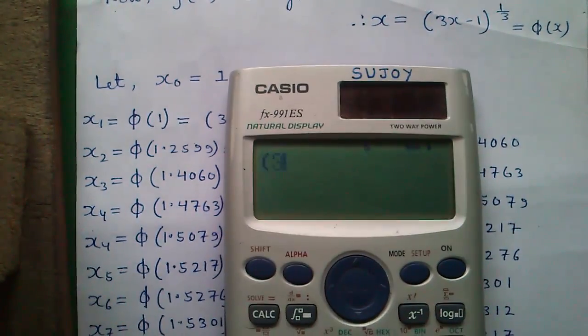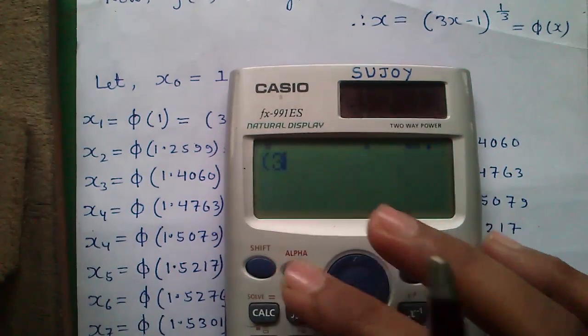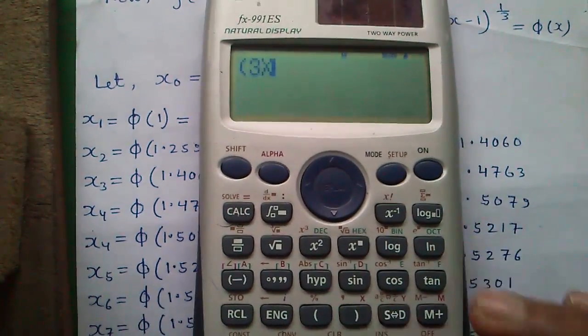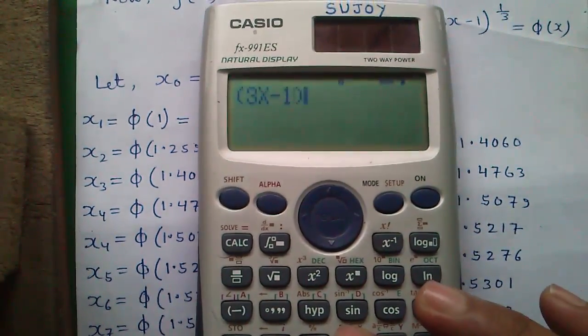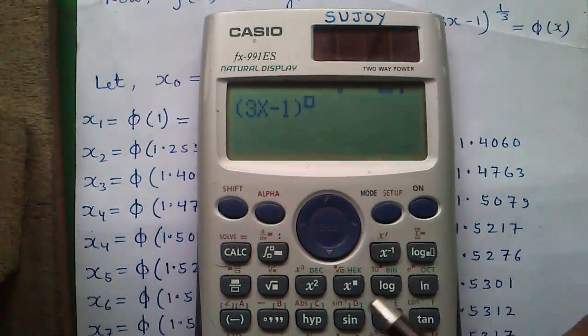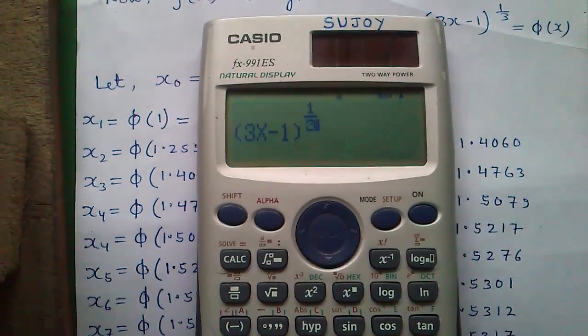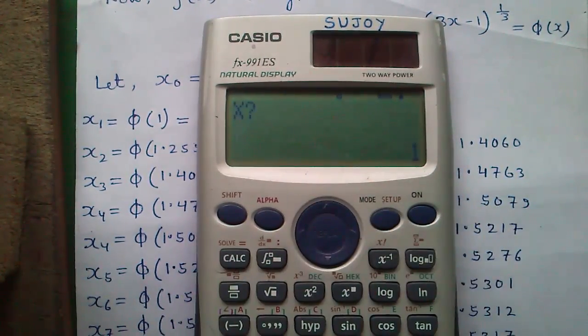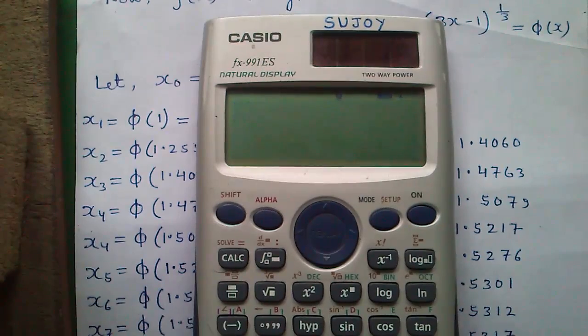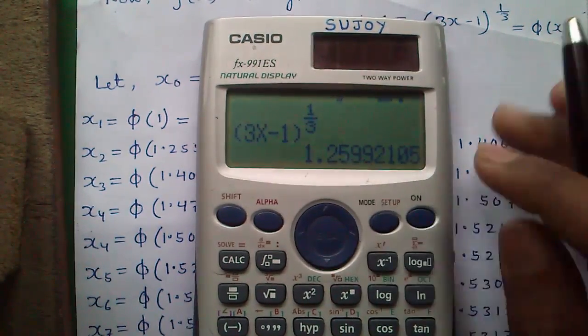On this calculator, type 3 times x (press alpha), write in parenthesis minus 1, to the power (press this button), press fraction 1 by 3, and press CALC. So x is 1, press equals to button. You will get 1.2599.